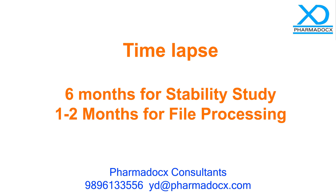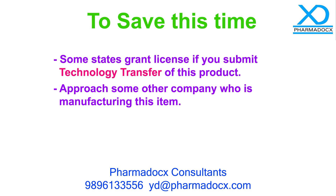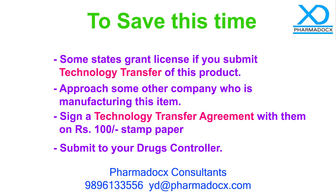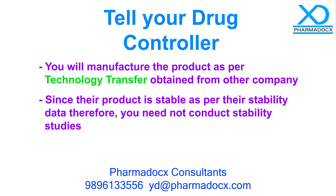Approximately eight months total time is taken for grant of license — six months for stability testing plus one to two months for file processing. To save this six-month stability testing time, some states grant a license if you submit a technology transfer of the product. This means you approach another company that is already manufacturing the item, sign a technology transfer agreement with them on a rupees 100 stamp paper, then obtain their product license and stability data and submit it to your drug controller. You tell the drug controller that since their product is already stable as per their stability data, you need not conduct stability studies again, and the license is granted.